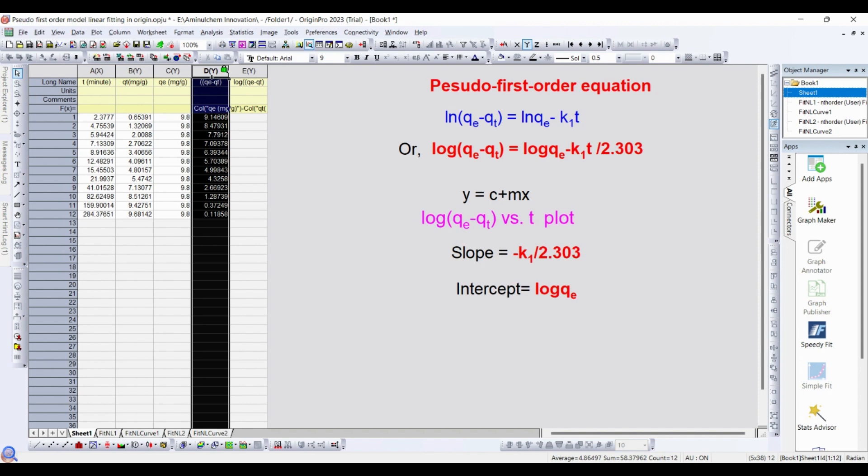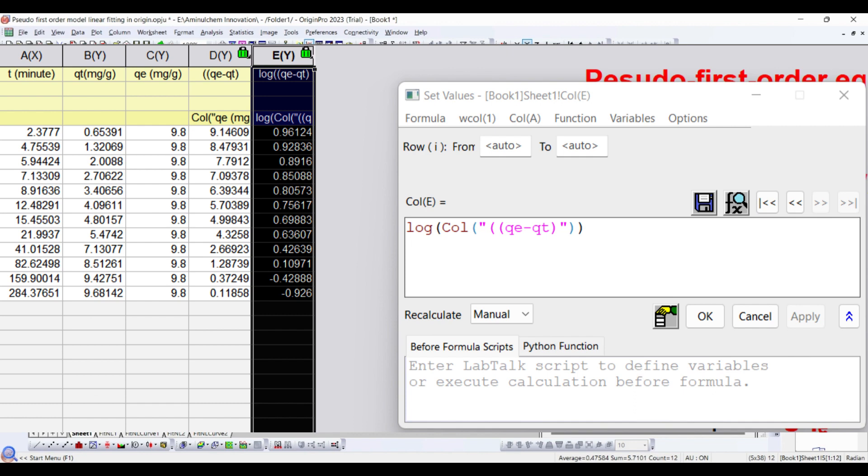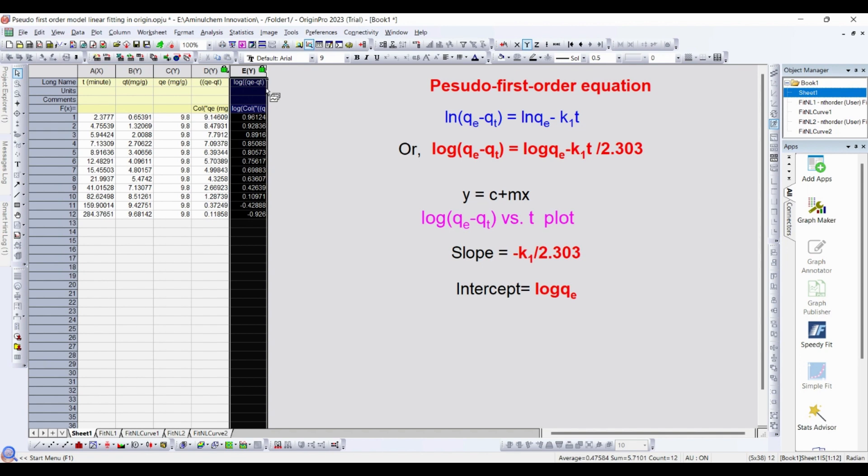Then you need to log it. Select this and set column values. Here is our log. Here is our log(qe - qt) value.